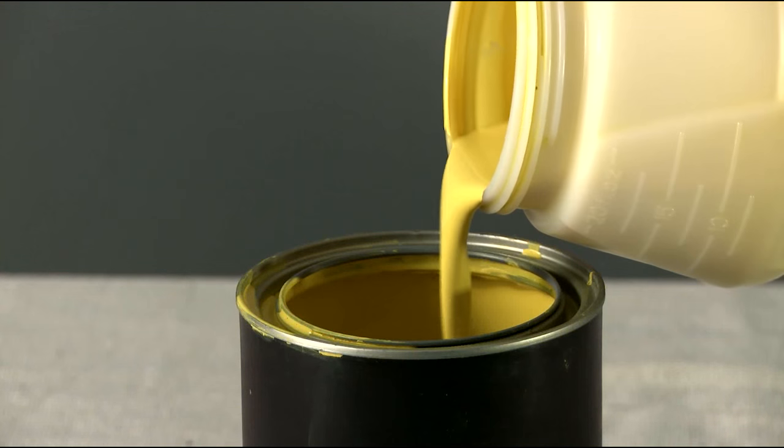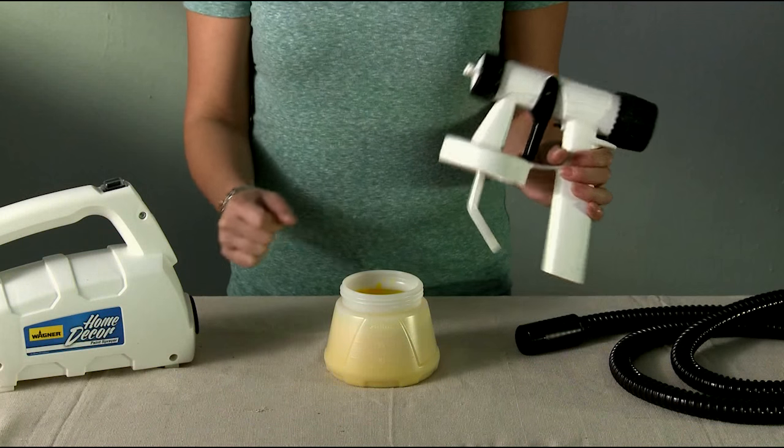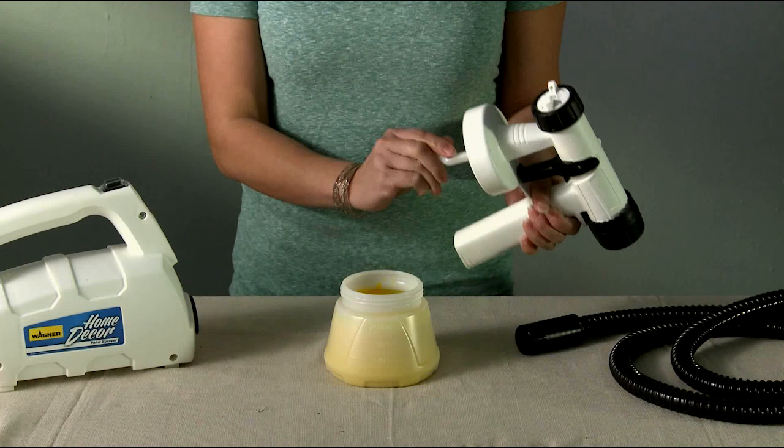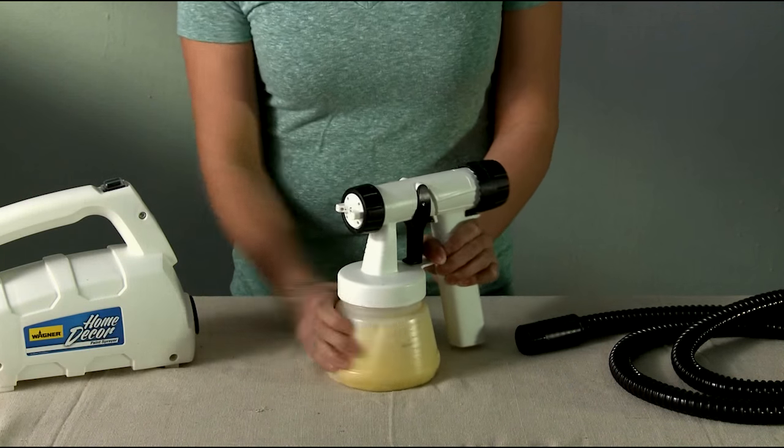It's okay to add thinned paint back into its original container. The suction tube can be aligned for upwards or downward spraying. Once the suction tube is adjusted, screw the container back onto the spray gun.